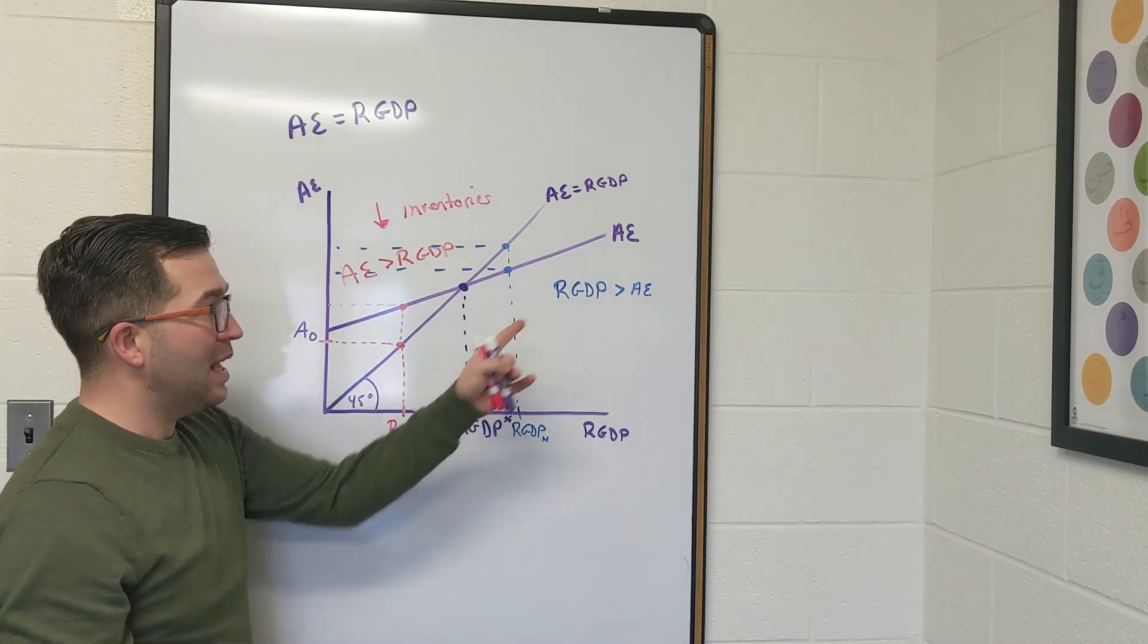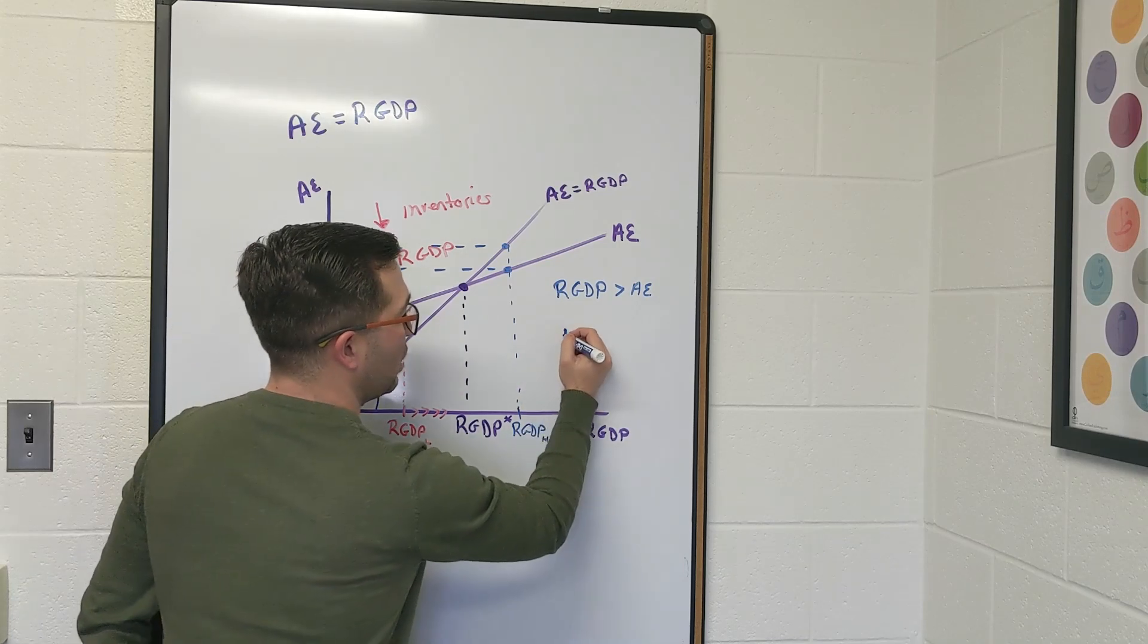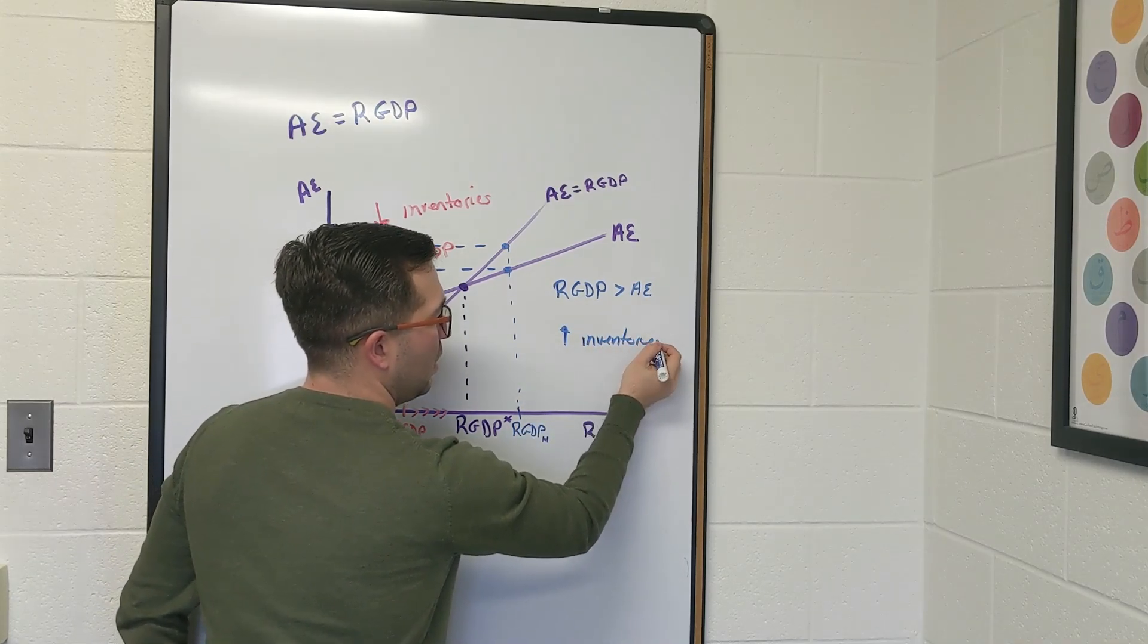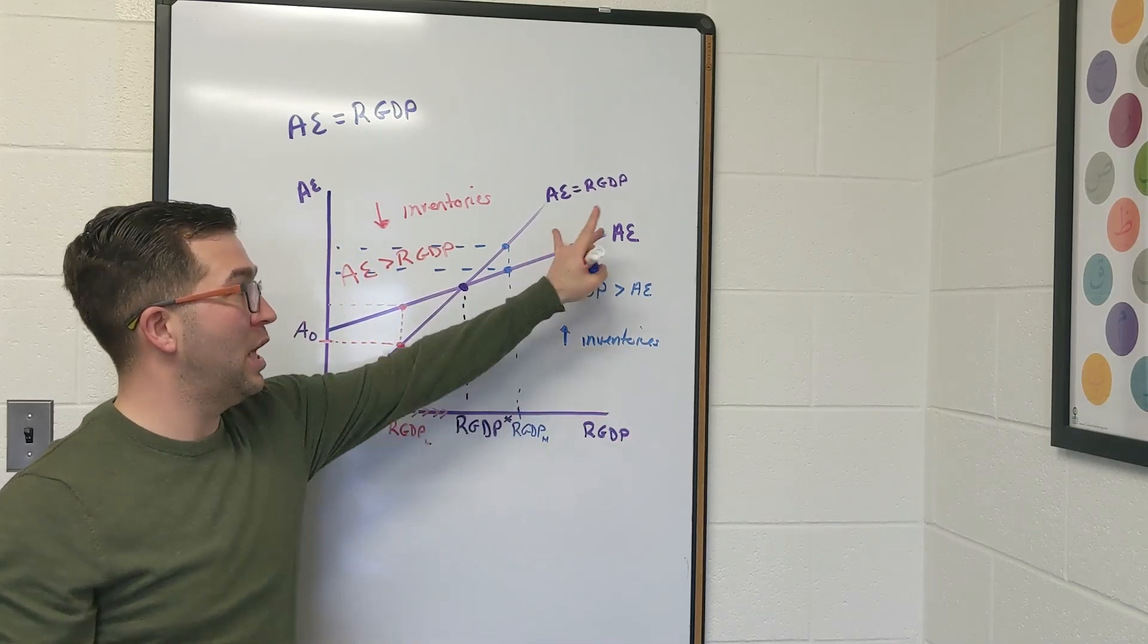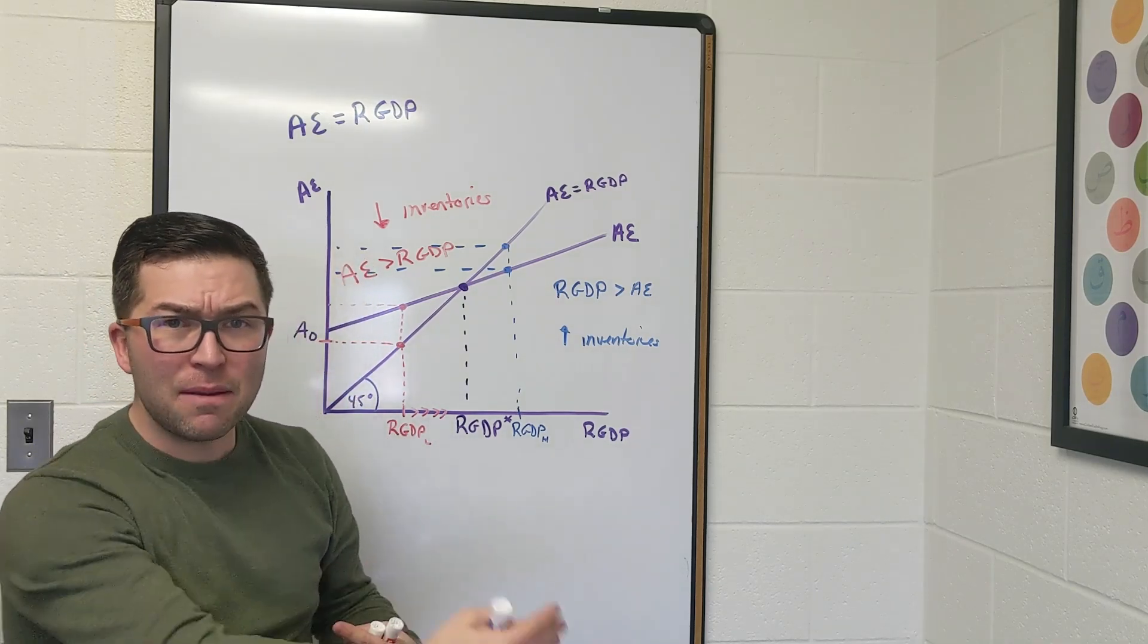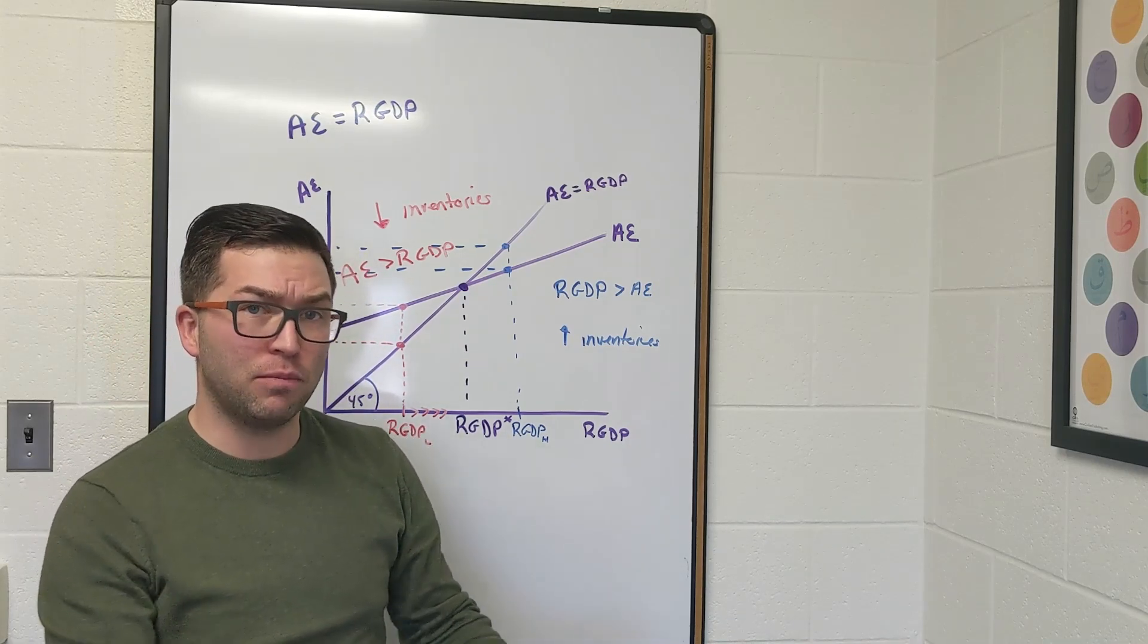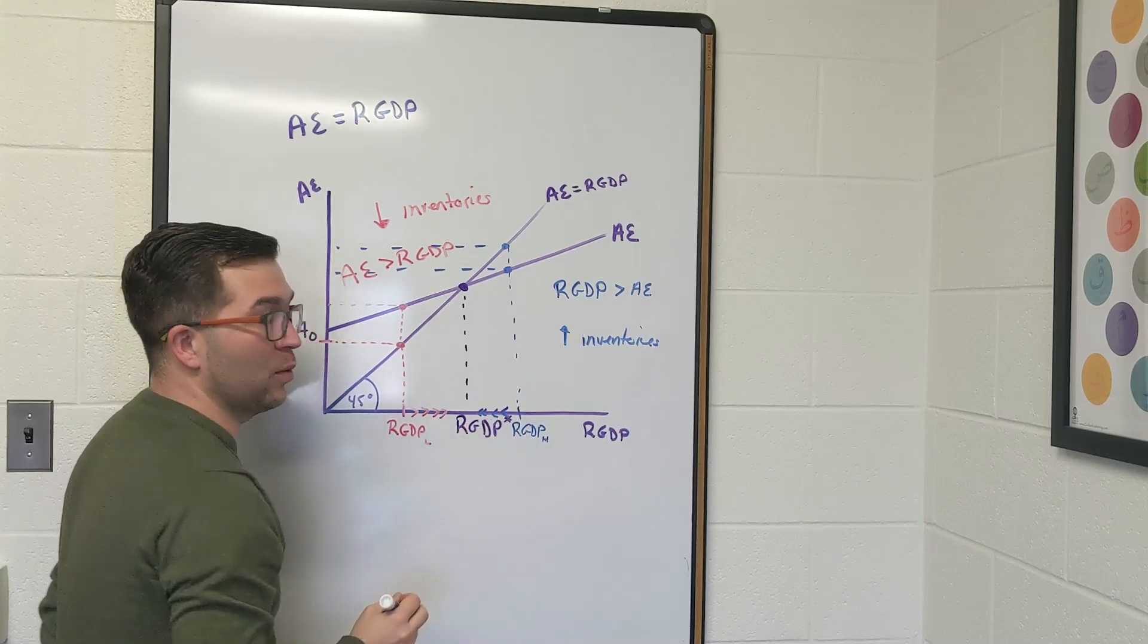What's that going to tell us? Well, that's going to tell us that we're producing more than what's spending, so those inventories are going to start to rise. So we start to see an unplanned increase in inventories in this part of the graph. Well, if there's more inventories there than going into the future, in the next time period, businesses don't need to hire as many people. They don't need to produce as much because they can just pull out of inventories. And so that's going to drive us back towards the equilibrium.